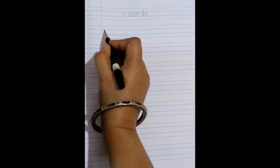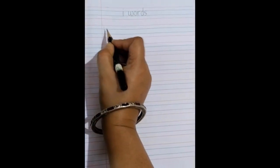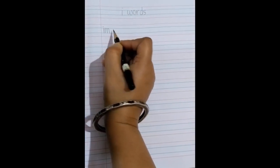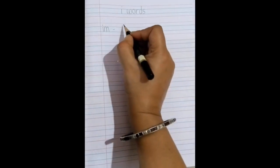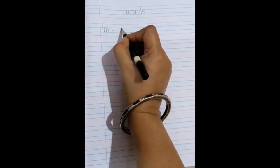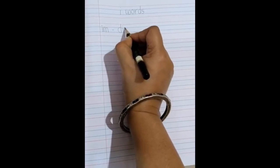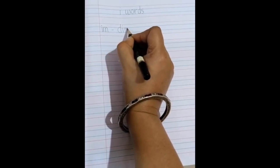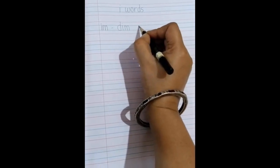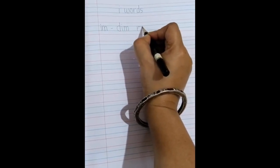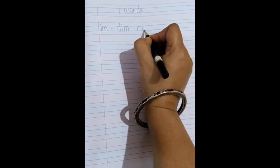So the next line we write M. The sound of I is E and M. Put a small dash and then it is. Let's write the first word, DIM. Duh and IM. DIM. And the next one, RIM. R and IM. RIM.